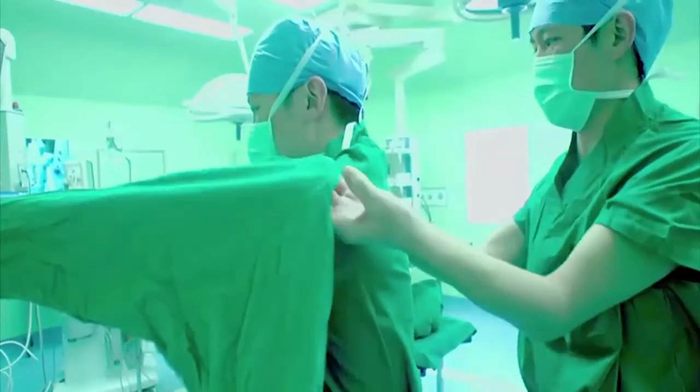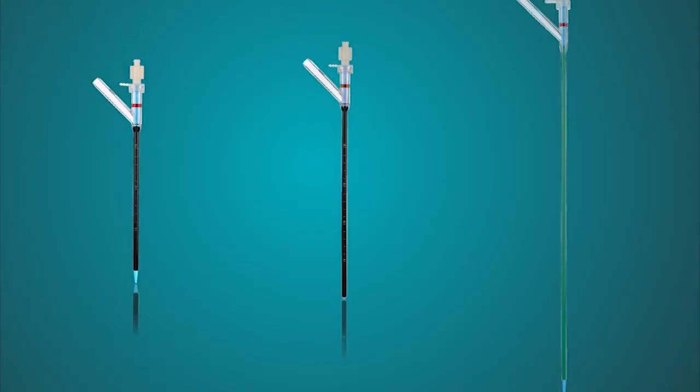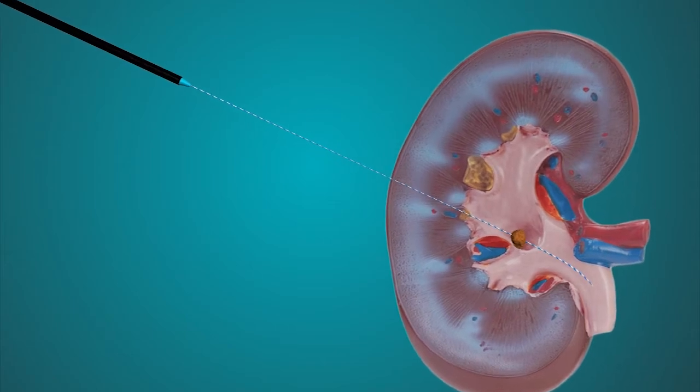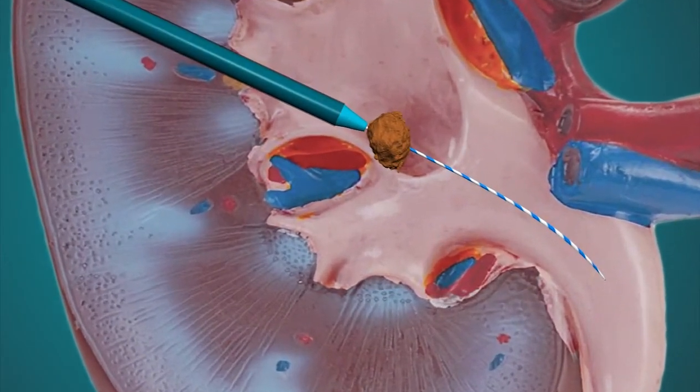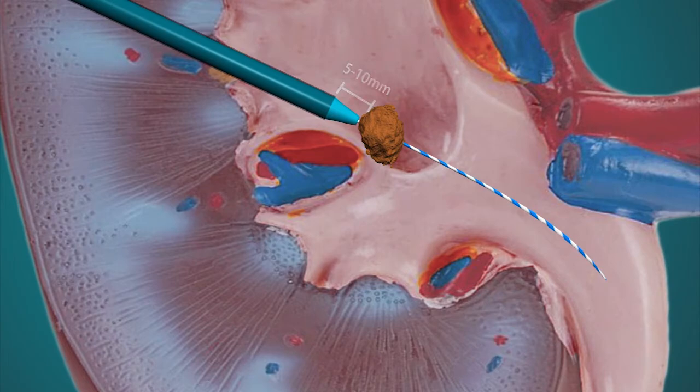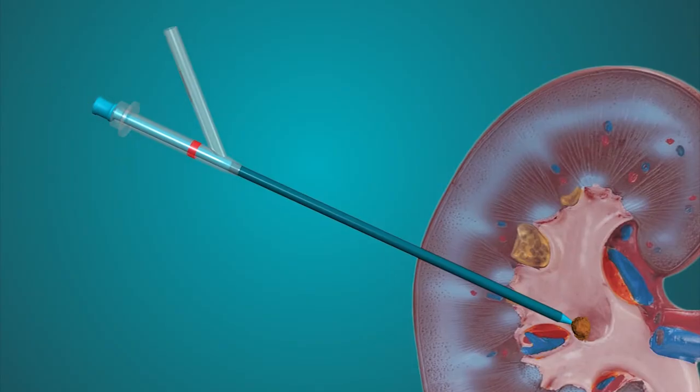Advance the percutaneous access sheath over a guide wire until it is within one centimeter distance to the stone. Remove the obturator and place the rubber cap on the proximal straight end.